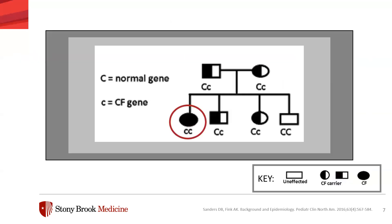Cystic fibrosis is an autosomal recessive disease, meaning everyone has two copies of the CFTR gene — one from their mother and one from their father. A person must have mutations in both copies of the CFTR gene to have cystic fibrosis. Interestingly, in the United States, about 1 in 31 people are carriers for the gene. Most people don't even know it and don't have symptoms, though some report mild symptoms.